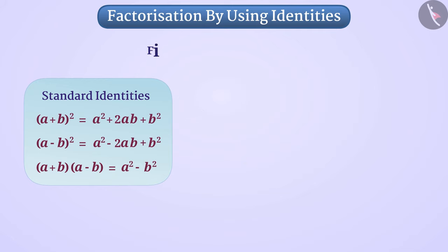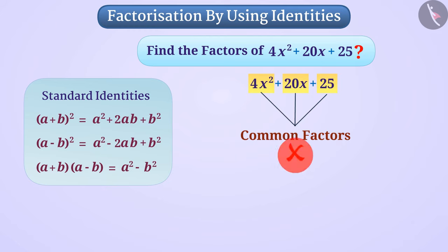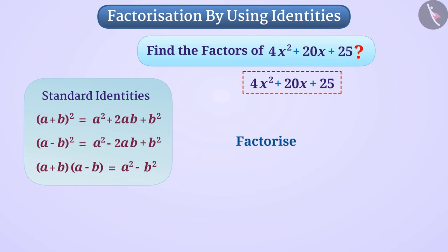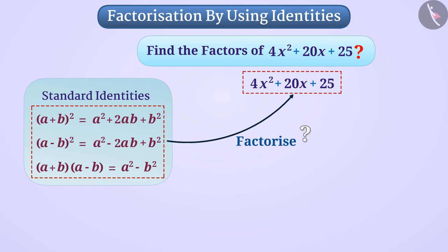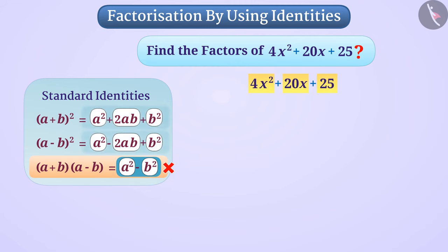Suppose we want to find the factors of 4x² + 20x + 25. Are there any common factors in the three terms of this expression? Think. No, there are no common factors in these three terms. We can factorize this expression using one of these standard identities. There are three terms in this expression. The third standard identity has only two terms on its right side, so we cannot use it. The first and second identities each have three terms on their right side, so let's understand which identity we can use.